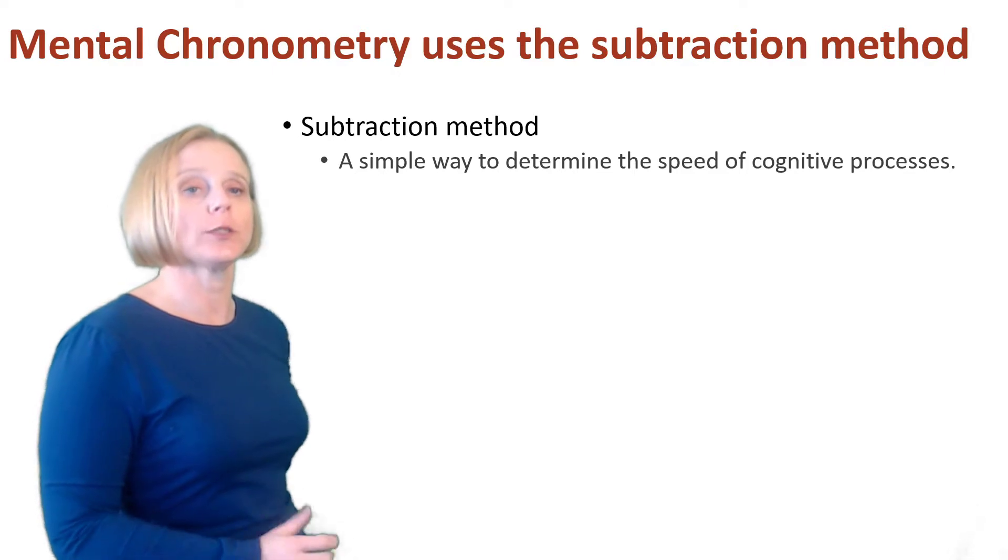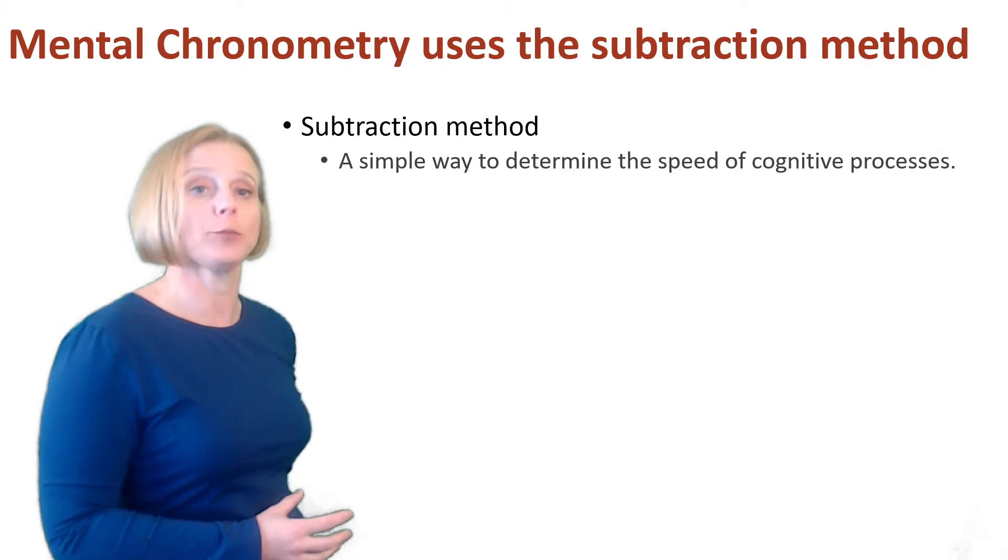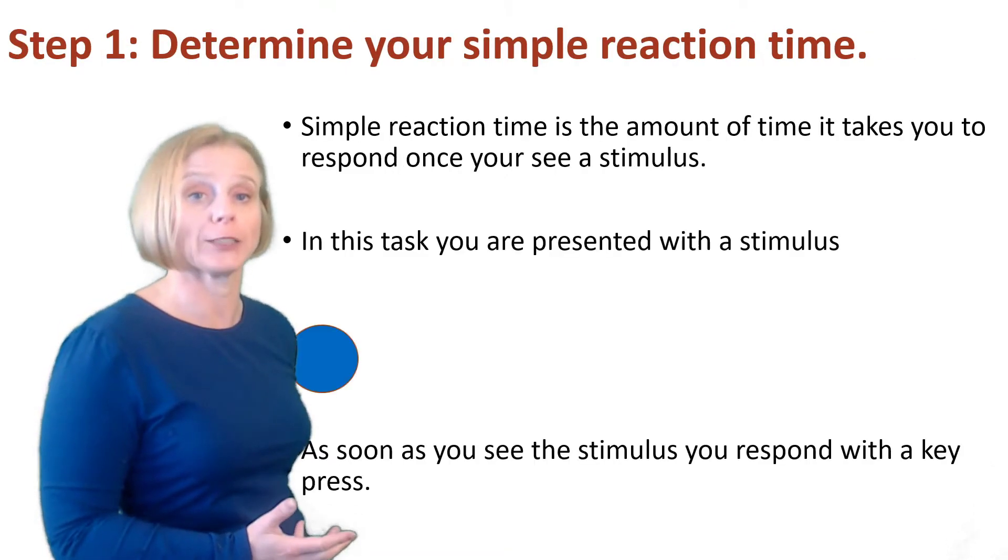Mental chronometry uses what is known as the subtraction method, and it's a simple way to determine the speed of cognitive processes by subtracting simpler processes from more complex ones.